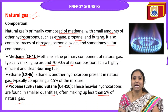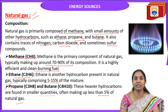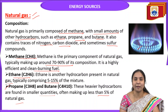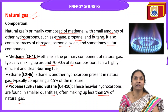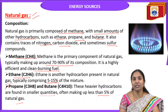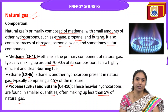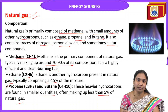So the composition of natural gas: the main component is methane, present at 70 to 90 percent. Other hydrocarbons include ethane (5 to 15 percent), propane and butane (about 5 percent). The remaining components are traces of nitrogen, carbon dioxide, and sometimes sulfur compounds — present in very small amounts.